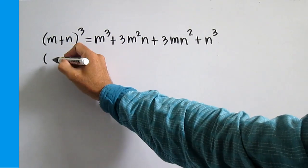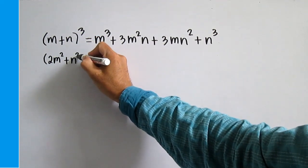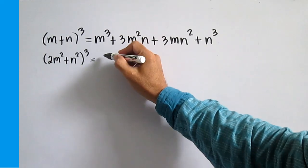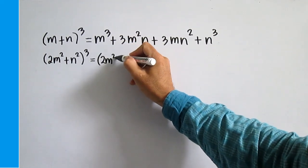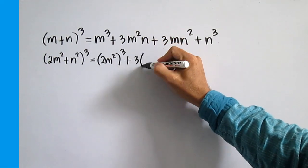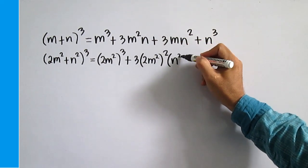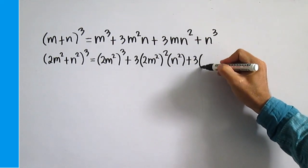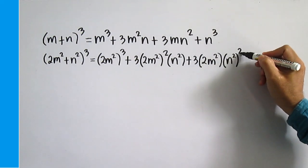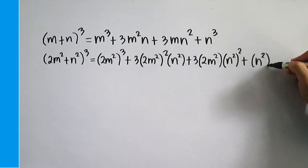Another example. The cube of a binomial consists of the cube of the first term, thrice the product of the square of the first term and the second term, thrice the product of the first term and the square of the second term, and the cube of the second term.